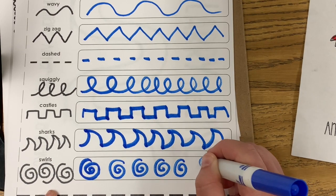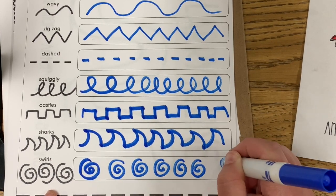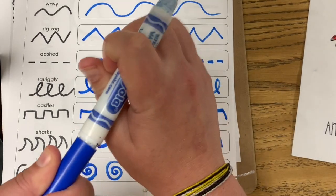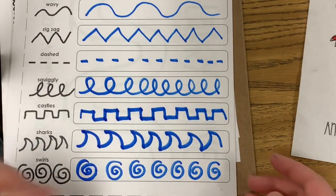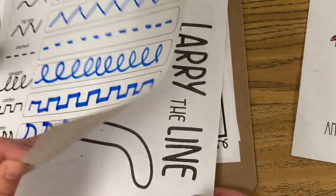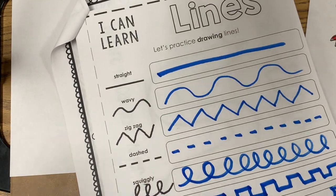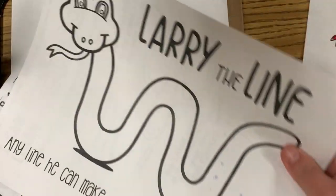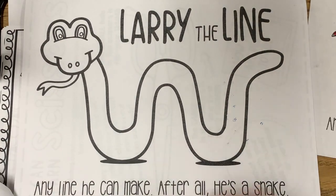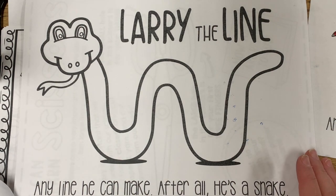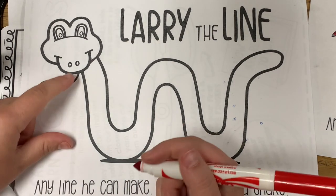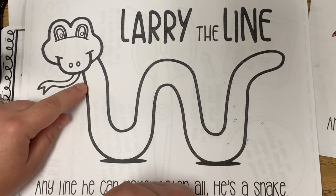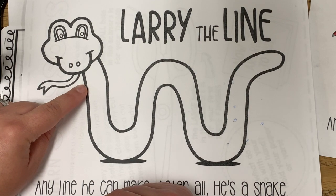Now we've learned how to make all of our lines. When you're done, make sure you snap that cap on your marker. We're going to turn the page to our Larry the Line paper and start making our lines. I'm going to use a different color for each line — starting with red. You can use whatever color you want. We're going to start about right here on Larry's neck and make our first line.